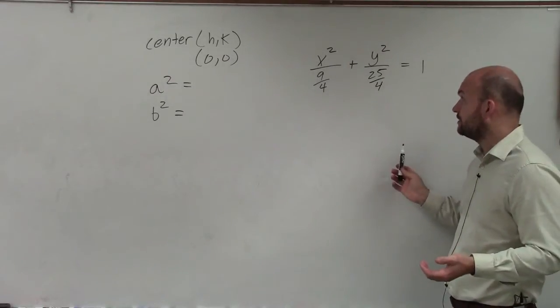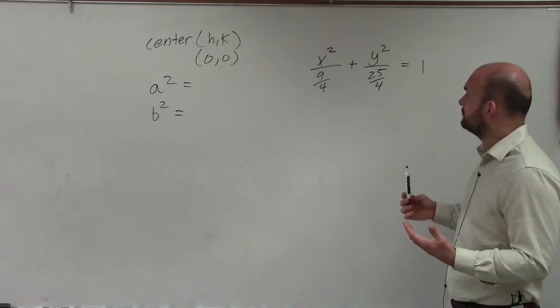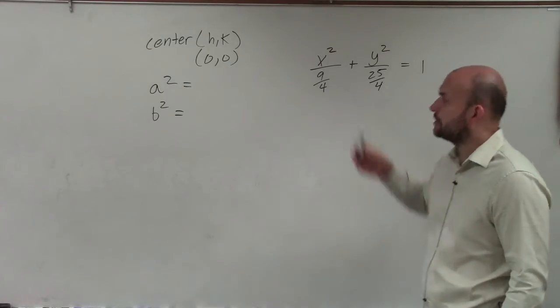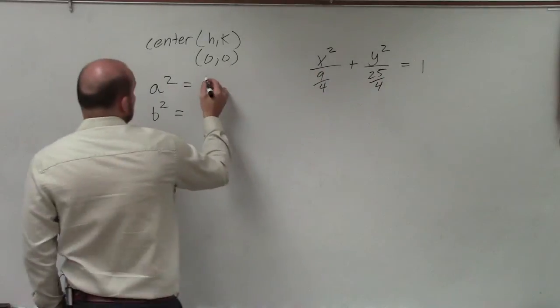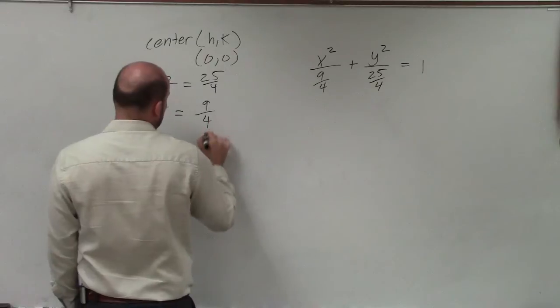Well, they both have a denominator of 4. And since they both have a denominator here of 4, you can see that 25 over 4 would be larger than 9 over 4. So my a² is going to be 25 over 4, and my b² is going to be 9 over 4.